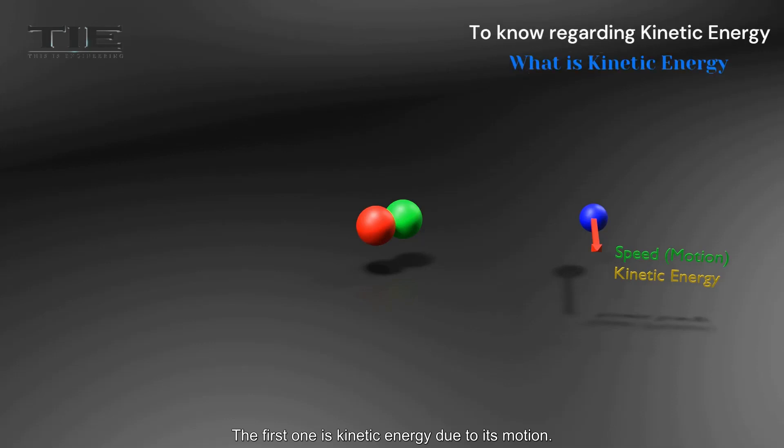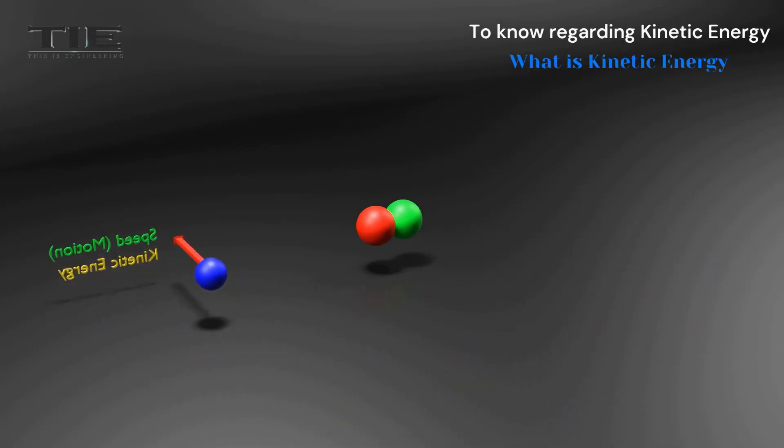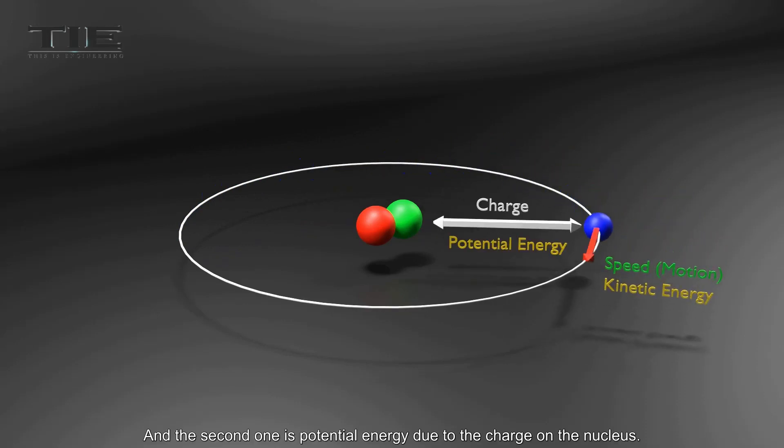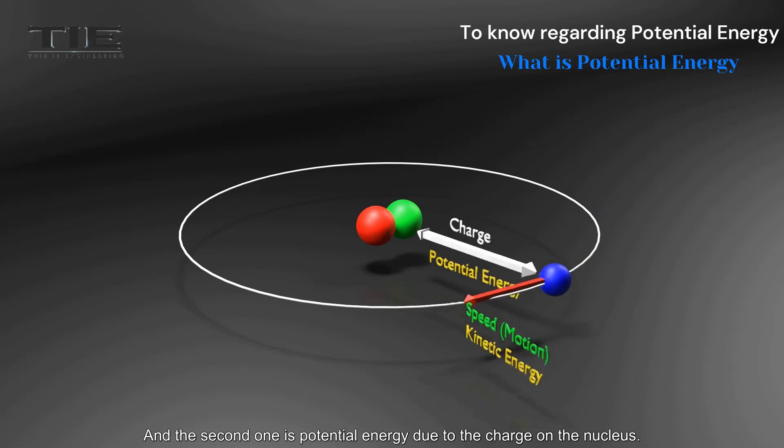The first one is kinetic energy due to its motion. And the second one is potential energy due to the charge on the nucleus.